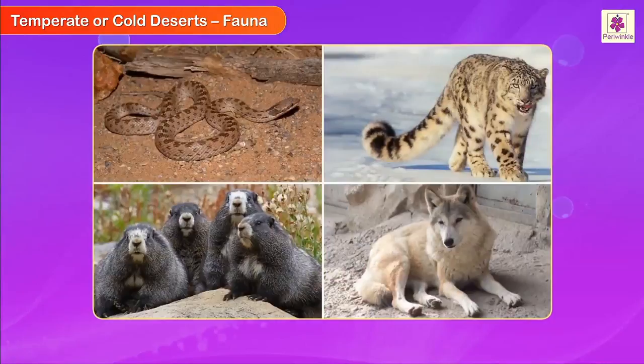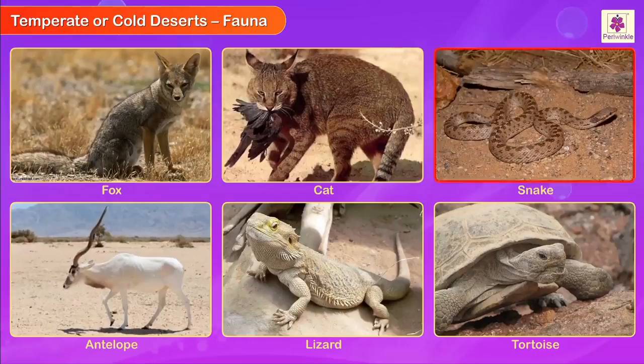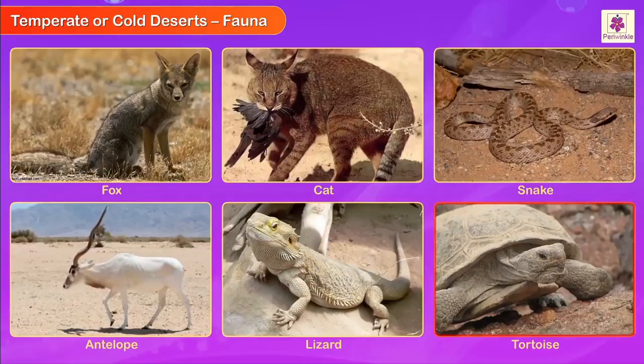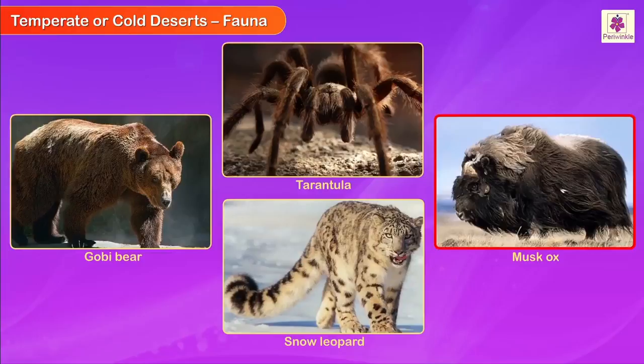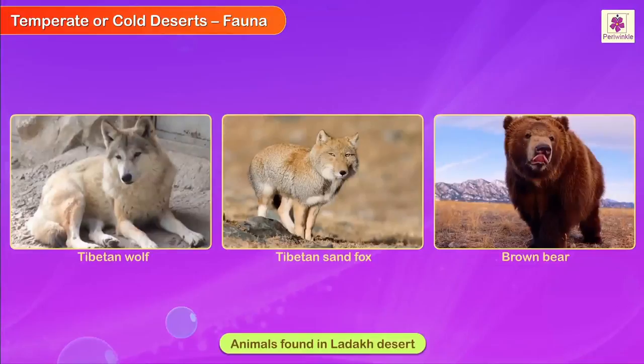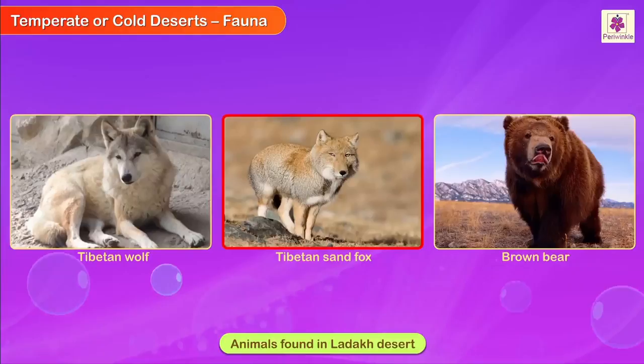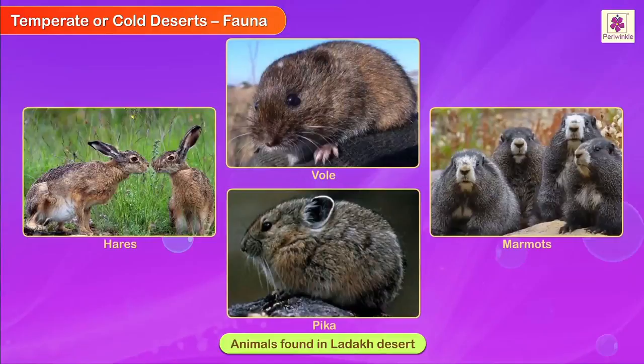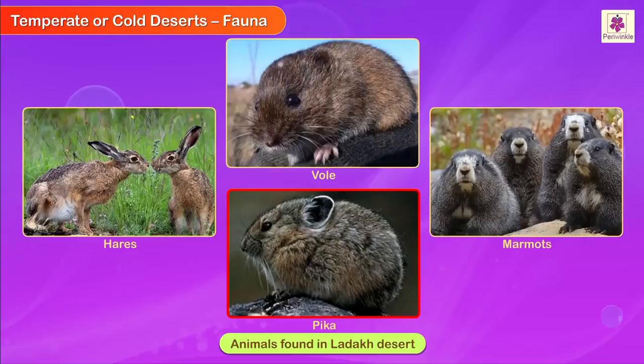Fauna: Temperate deserts abound in wildlife with animals such as foxes, cats, snakes, antelopes, lizards, tortoises, Gobi bear, tarantula, musk oxen, and snow leopards. Animals found in Ladakh deserts are Tibetan wolf, Tibetan sand fox, and brown bears. Smaller animals like hares, vole, marmots, and pika are also commonly found here.